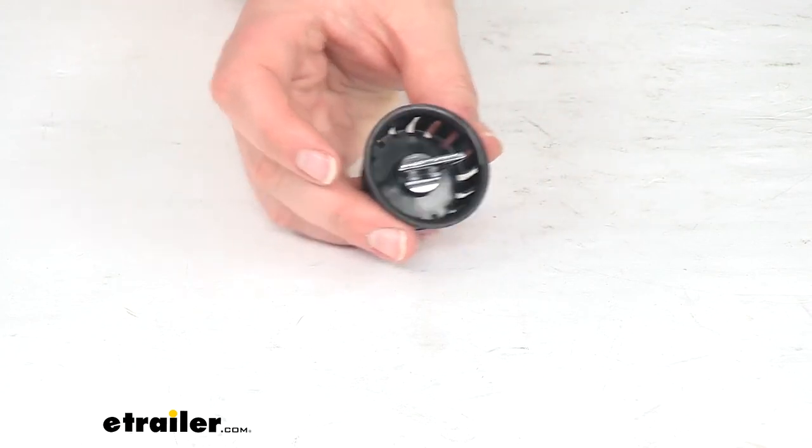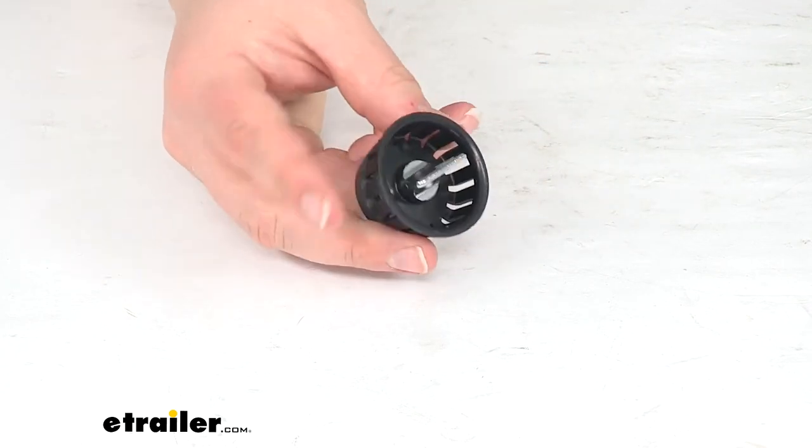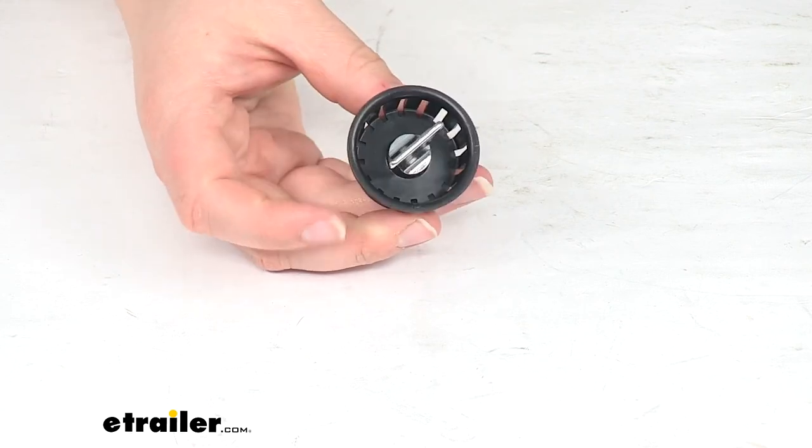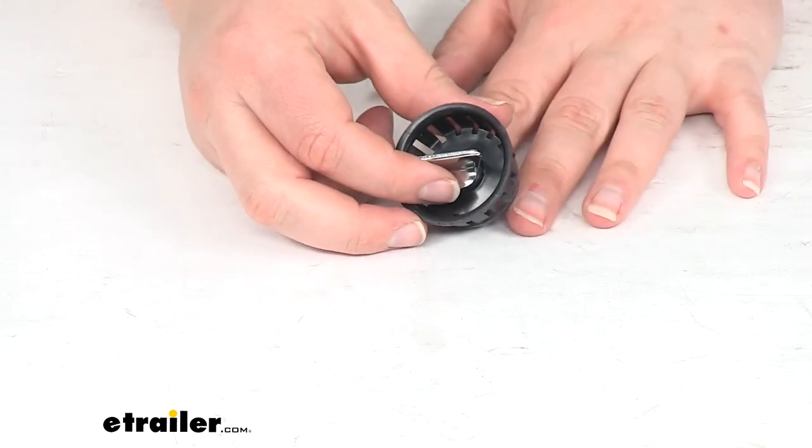That's going to do it for our look at the threaded sink basket. If you need any other replacement parts, we have a lot of options available here at eTrailer.com, so definitely check them out. Thanks for watching and we'll see you next time.